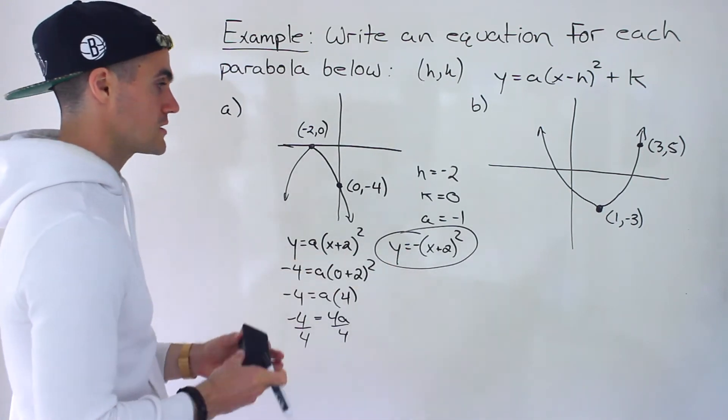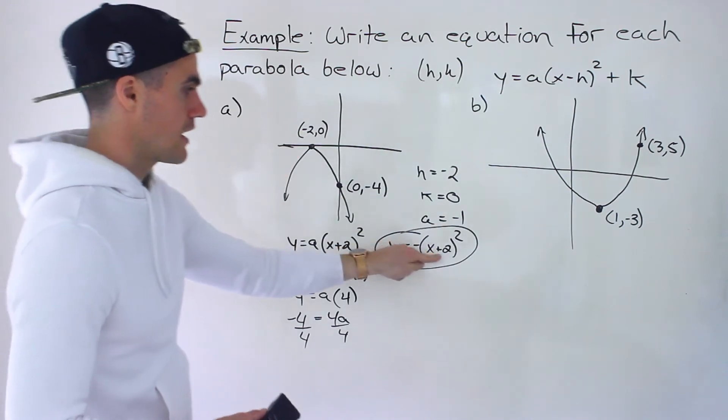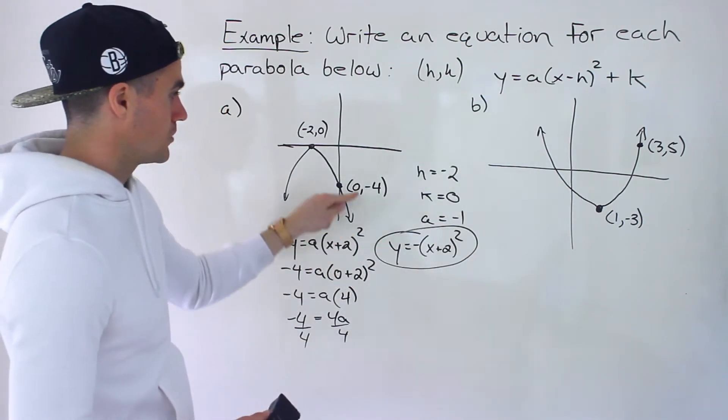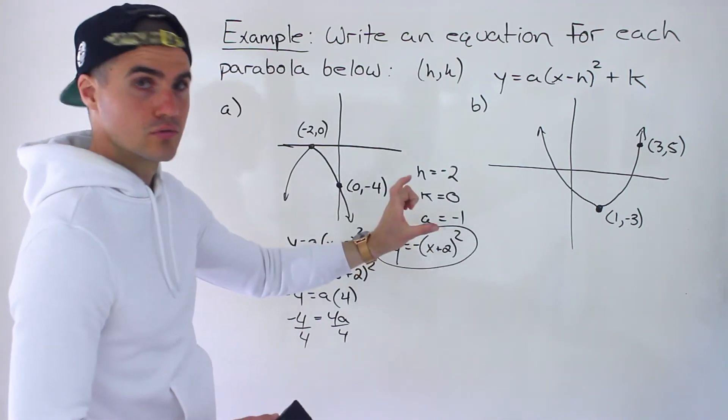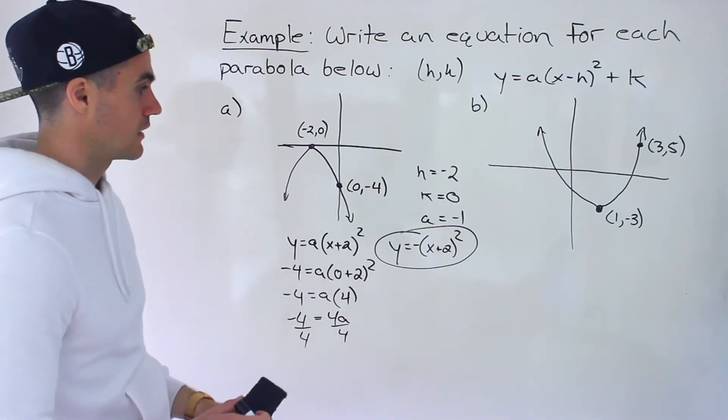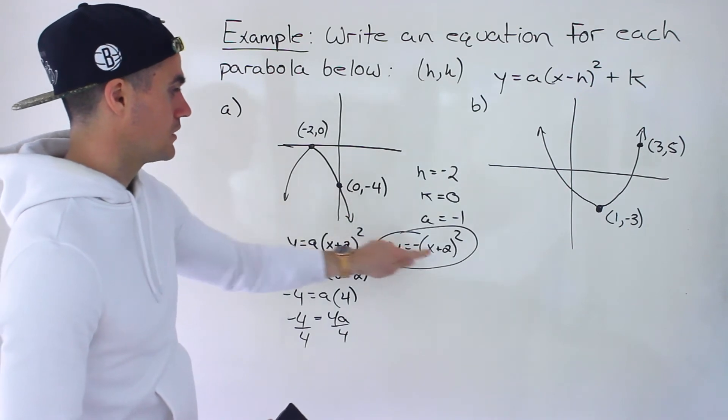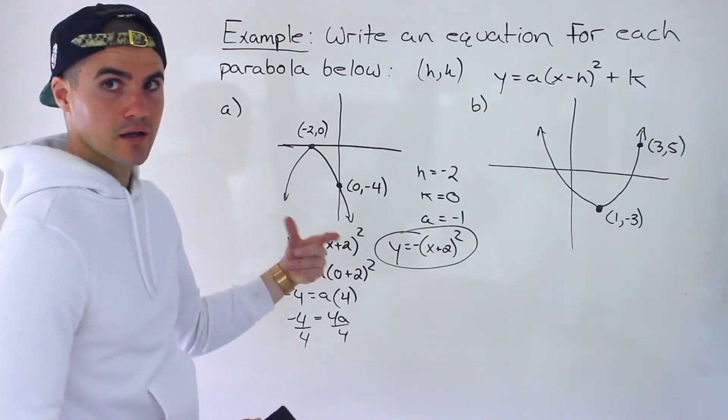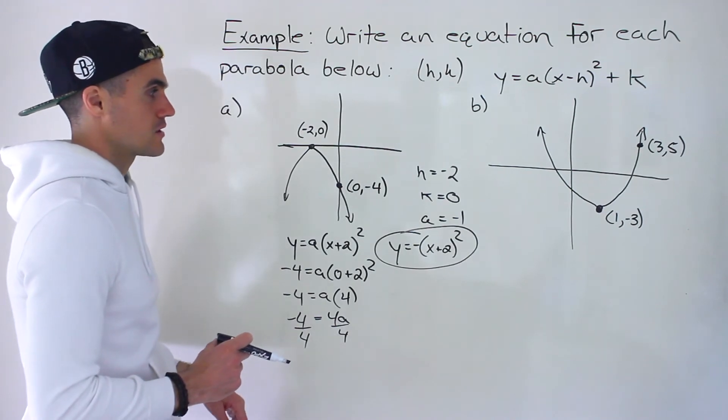And then if you want to quickly check your answer, notice from here, the vertex is negative two and zero, right? The h and k value. And then you could plug in zero for x, zero plus two, two to the power of two, four times negative one does indeed give us negative four. When you plug in the x value of that point here, you should get the corresponding y value. And then from there, you could be pretty confident that the answer is correct.